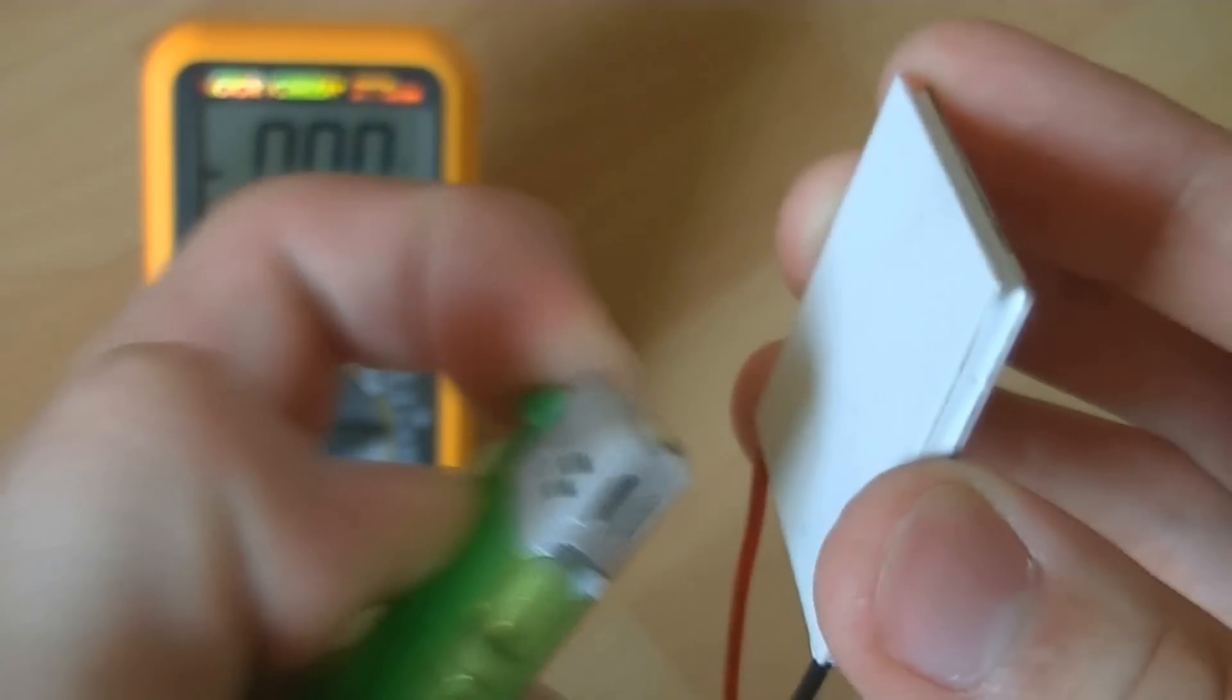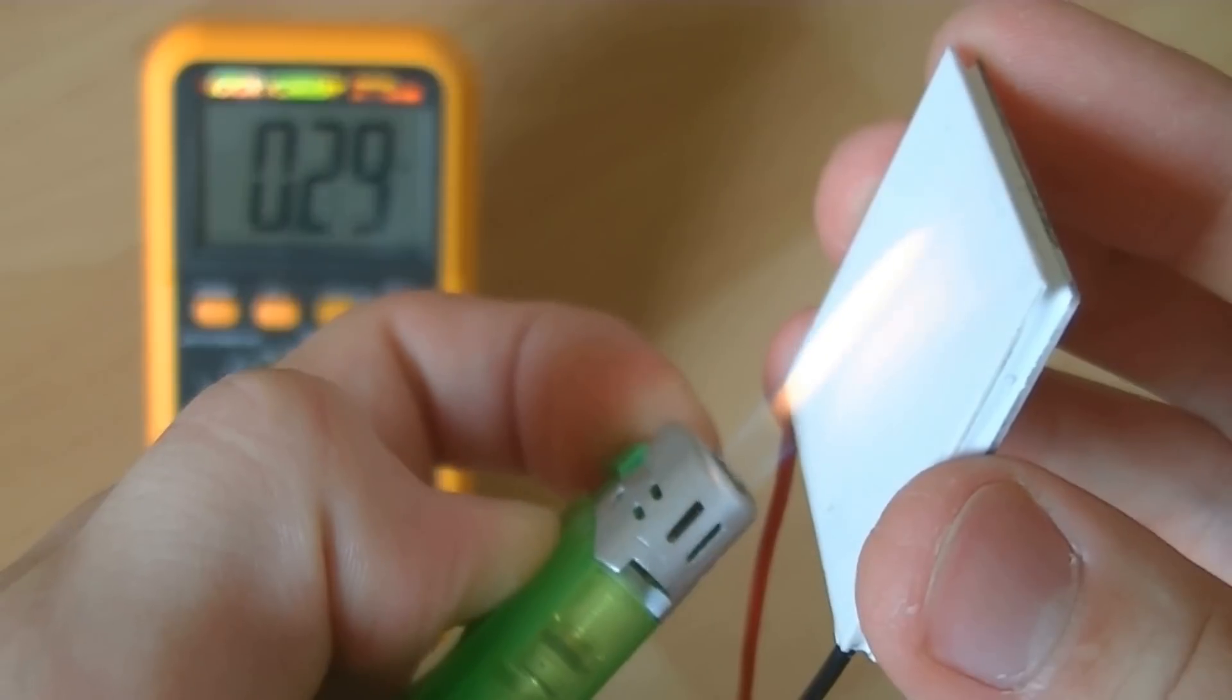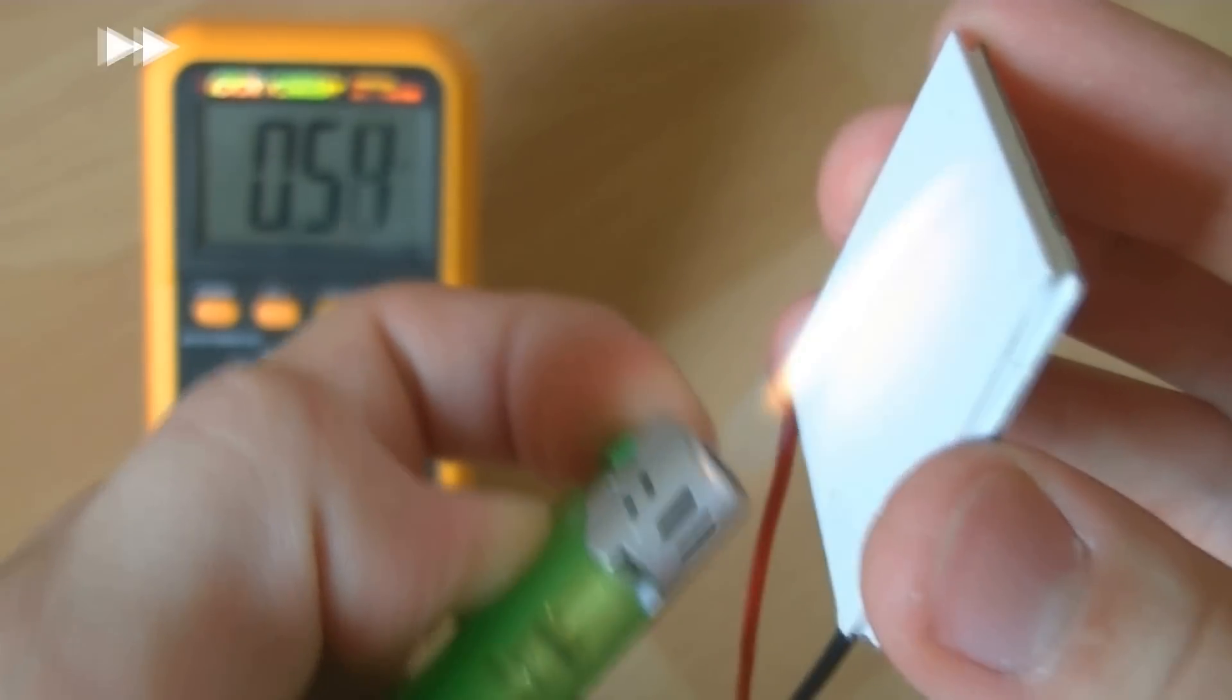Now, let's see what happened with the flame. The heat flow moving from the hot side to the cold one make it work. The moment we stop heating the module, the produced voltage decreases.